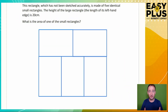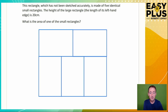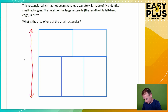Let's get started. We're told that this rectangle is made of five identical small rectangles. The height of the large rectangle is 20 centimetres, and we have to find the area of one of the small rectangles. As with any difficult question, you should just start off by filling in what you already know. So the height of the large rectangle is 20 centimetres.